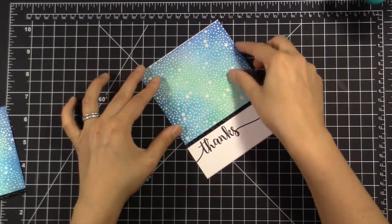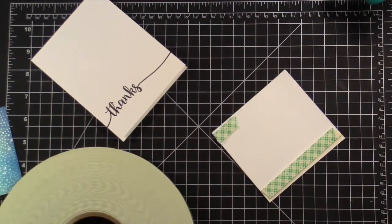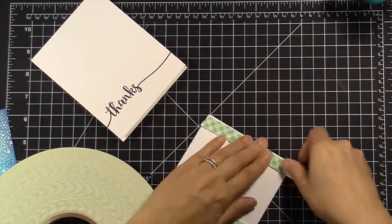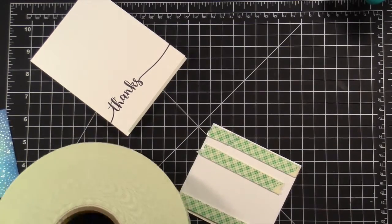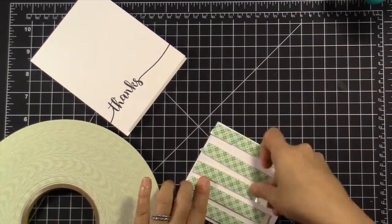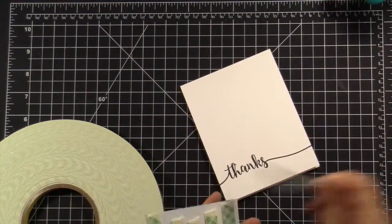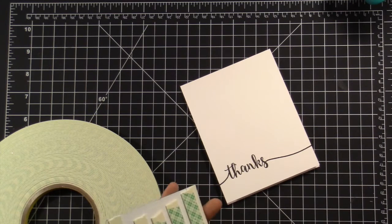So I erased my pencil mark, and I'm just making sure that everything matches up just right, and I'm just taking some foam tape and using that to raise the panel up because I just wanted it to kind of stand out a little bit more and leave that sentiment kind of sunken back on the card.